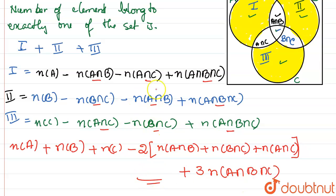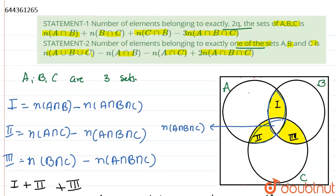This is the derived answer for Statement 2, the number of elements belonging to exactly one of the sets. However, the answer given in the question is different — it is false. So the first statement is true, but the second statement is false because the formula given for exactly one element does not match. Thank you.